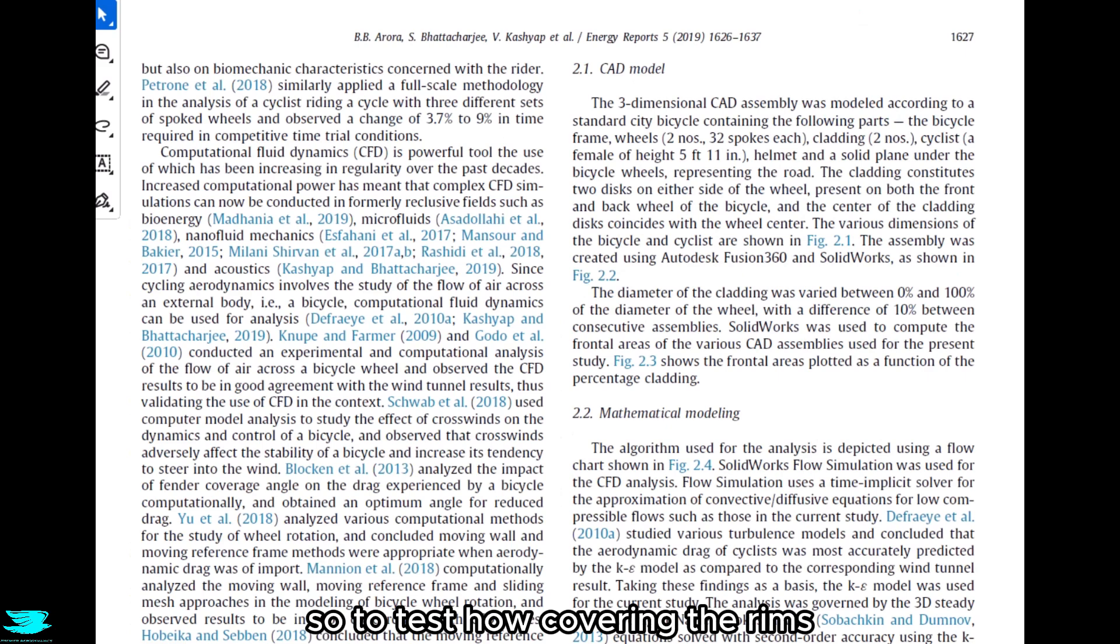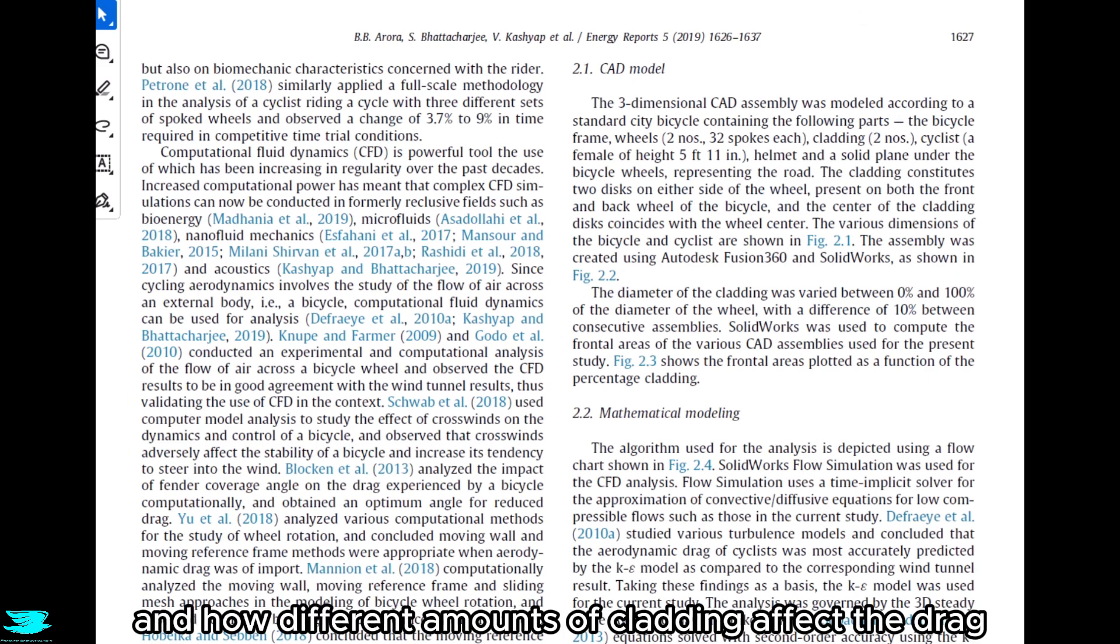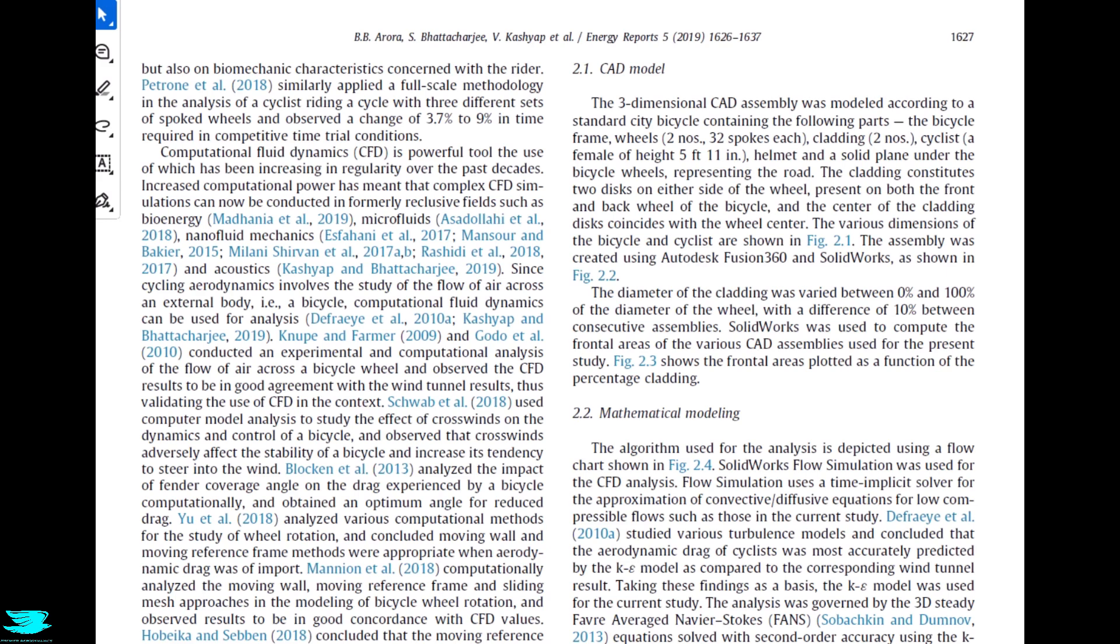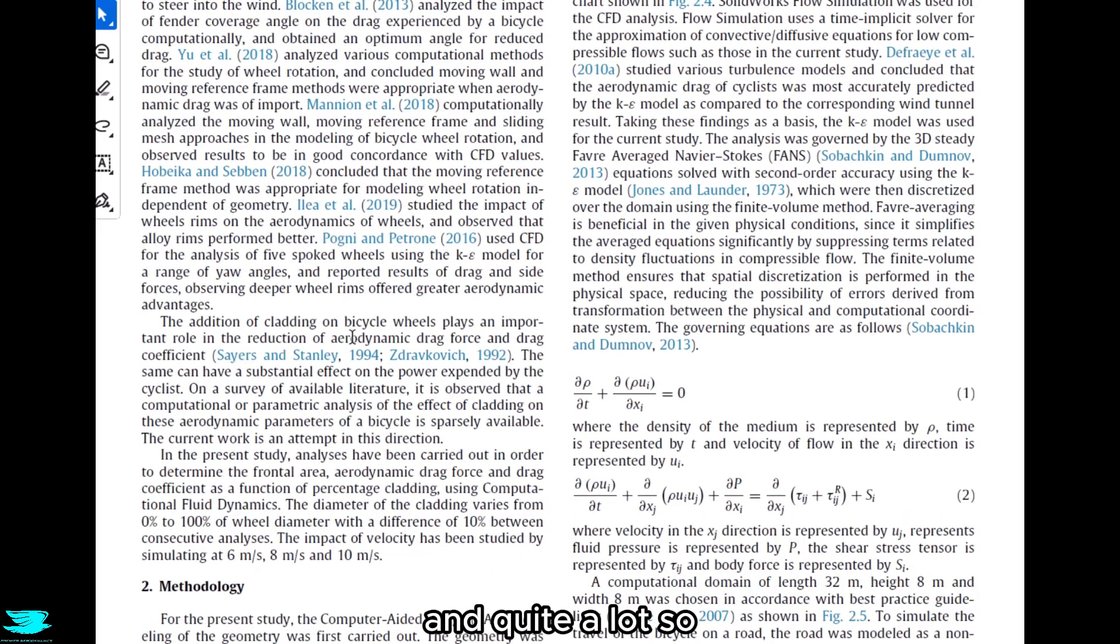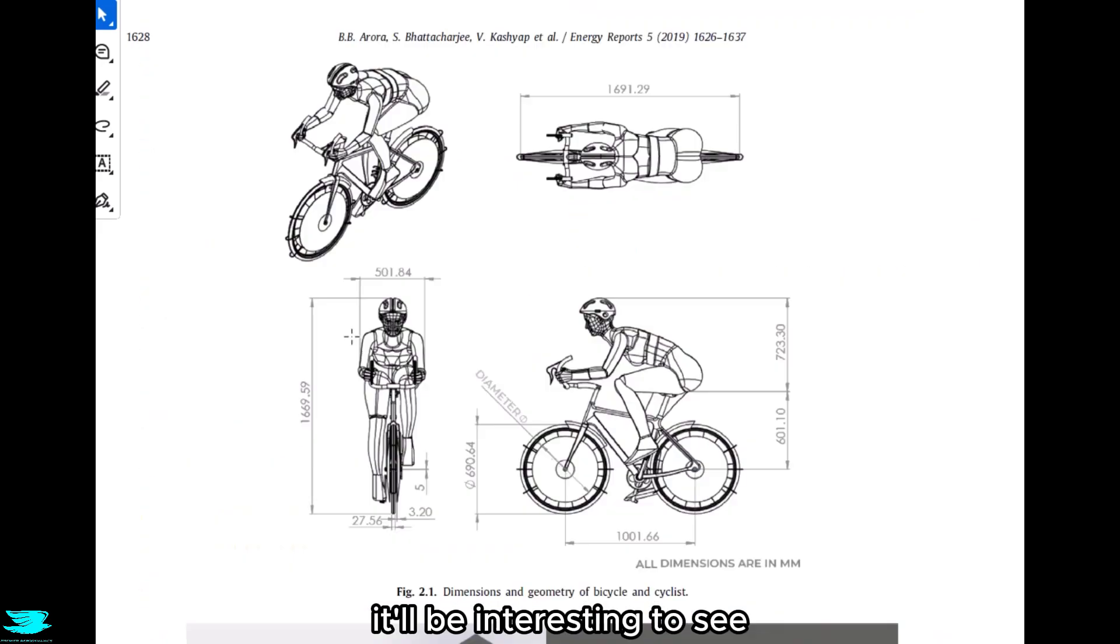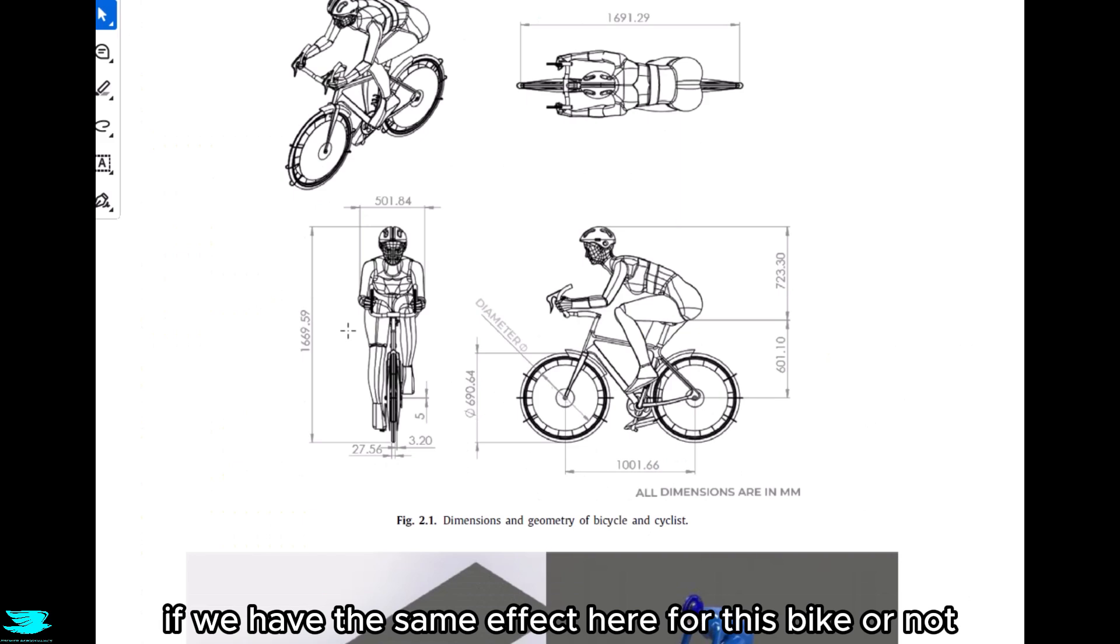To test how covering the rims, which the authors call cladding, and how different amounts of cladding affect the drag, they use CFD, so computer simulations. This cladding is kind of like how closed the rims are on a car. For cars, closing rims pretty much always reduces the drag, quite a lot. So it'll be interesting to see if we have the same effect here for this bike or not.